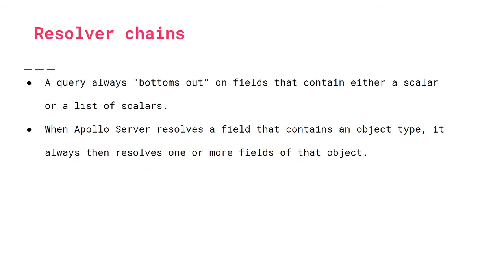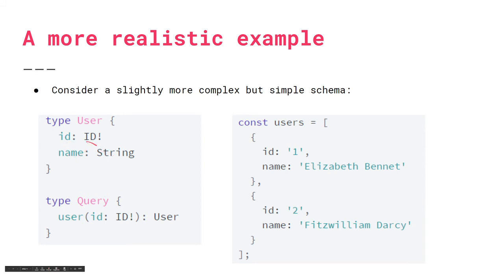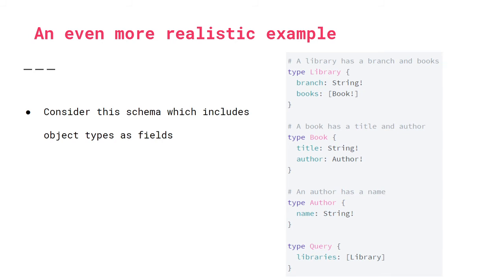Now let's talk about resolver chains. In the previous simple example, fields were all scalar types. But if a field were an object type — like a friend field of type Friend — that object type has its own fields, and we'd need to resolve how to get those fields when the client asks for them. This gets more complicated because we go through multiple resolvers. Here's a more well-defined, realistic schema: type Library, type Book, type Author, type Query.